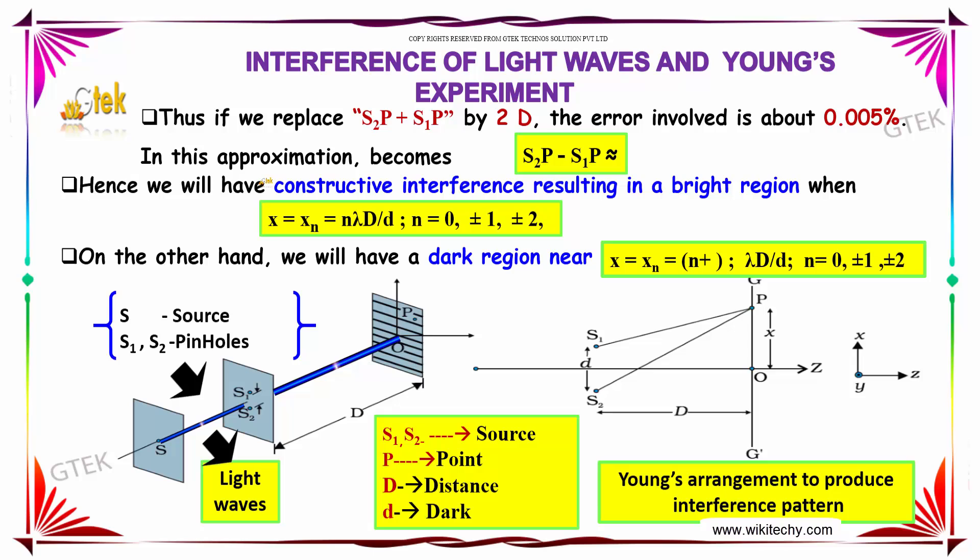Hence, we will have constructive interference resulting in a bright region when x = xn = (nλD)/d, where n = 0, 1, 2, 3, etc.